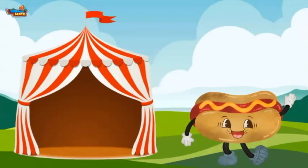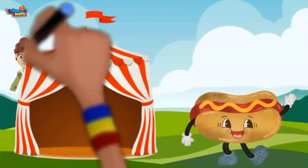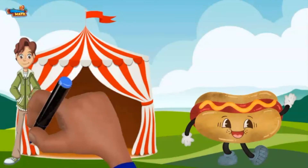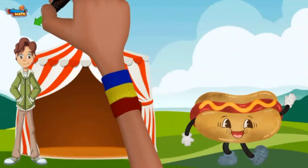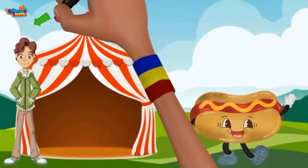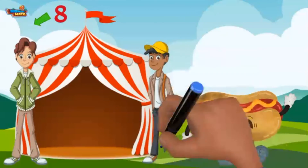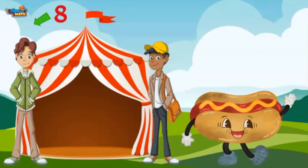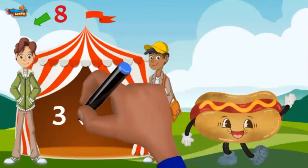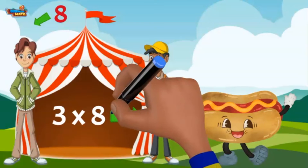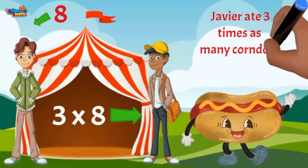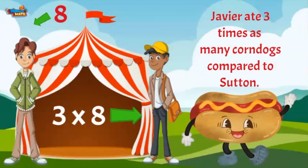Here's a fun one. This is Sudden. Sudden ate 8 corn dogs at the carnival. If you think that is a lot, the amount Javier ate is represented as 3 times 8. That means Javier ate 3 times as many corn dogs compared to Sudden. That's enough corn dogs for an entire lifetime.